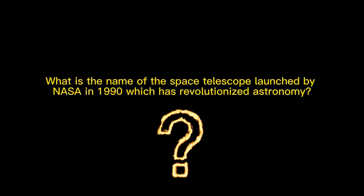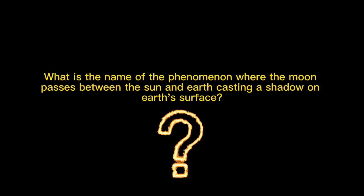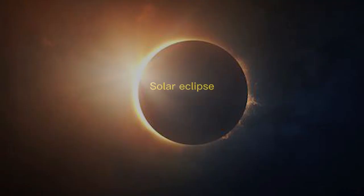What is the name of the space telescope launched by NASA in 1990, which has revolutionized astronomy? Hubble Space Telescope. What is the name of the phenomenon where the moon passes between the sun and Earth, casting a shadow on Earth's surface? Solar Eclipse.